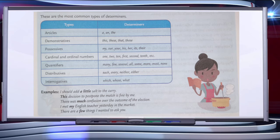For example, I should add a little salt to the curry. Here a little is a determiner and it is type of quantifier.